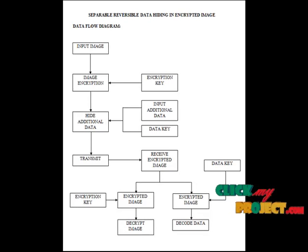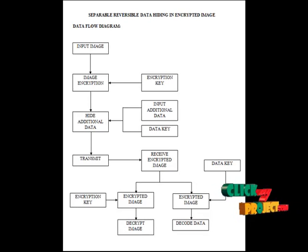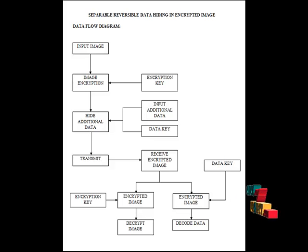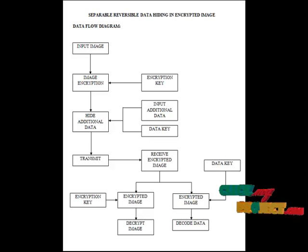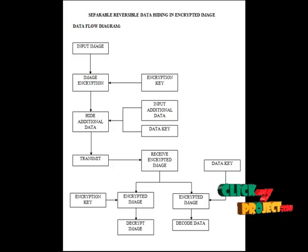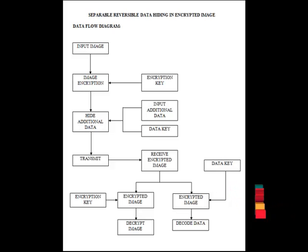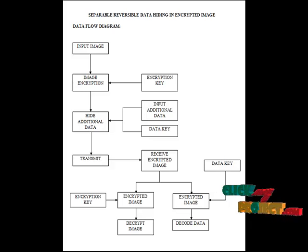At the receiver side, if the receiver gets the encryption key, he can decrypt the image but he cannot get the encoded data. If the receiver gets the data hiding key, he can decode the data but he cannot decrypt the image.